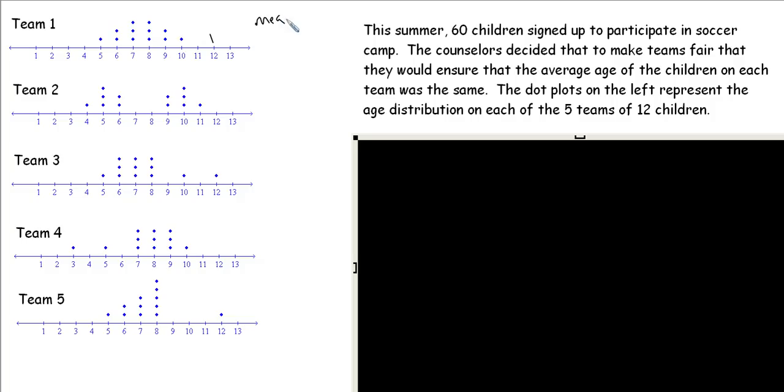Our mean would be the average of all the values: 5 + 6 + 6 + 7 + 7 + 7 + 8 + 8 + 8 + 9 + 9 + 10. There were 12 values, and that was going to give you a mean of 7.5.